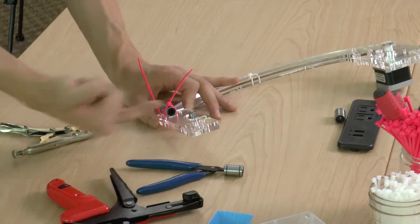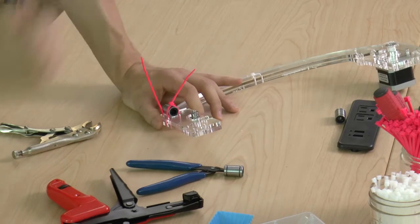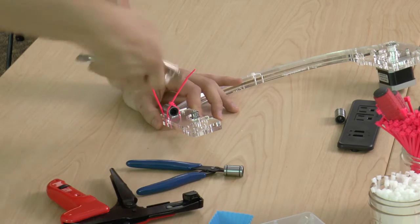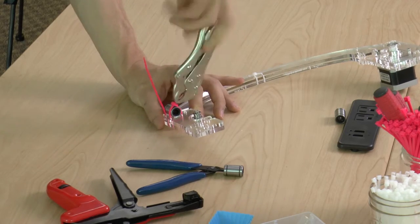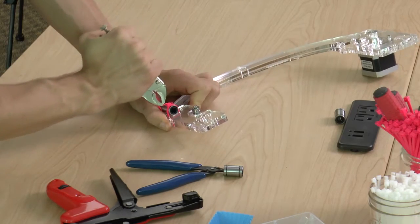Once I loop the zip tie in, it sort of wants to go in this direction. To tighten it properly, I have to go against that direction. So I'll take my vise grip, grab it as close as I can to the head of the zip tie, and then pull against the grain.